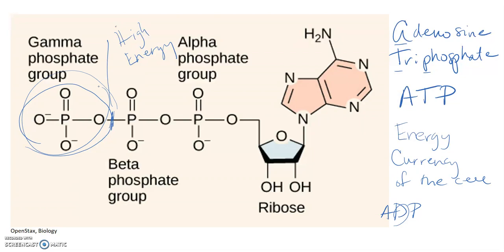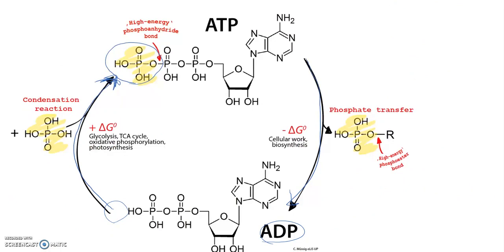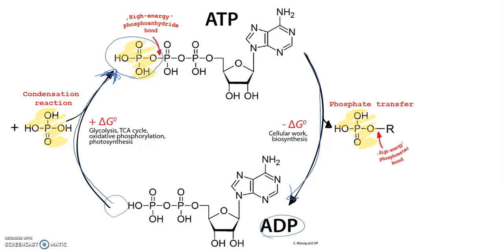ATP is not meant to be long-term energy storage. We store long-term energy in the form of fat or glycogen. ATP is a short-term molecule that allows the cell to do work, and it is constantly being converted back and forth from ATP to ADP. The cell has processes that re-energize ADP back to ATP, which is then used to do cellular work.